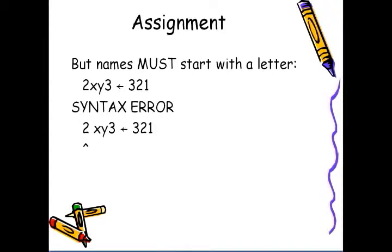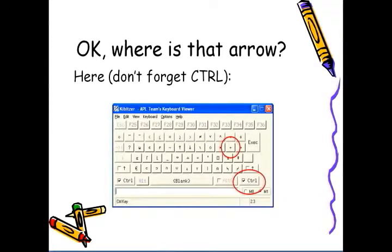Trying to assign a number to another number is not accepted in APL. So where do we find that little arrow? The arrow is located on the left bracket key on the US or UK keyboard, and you have to use control to get at it.